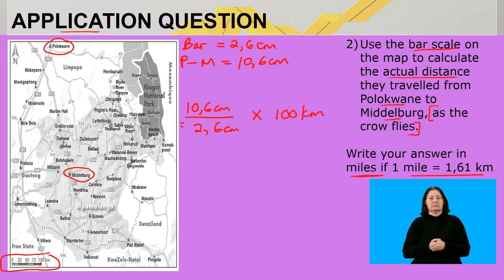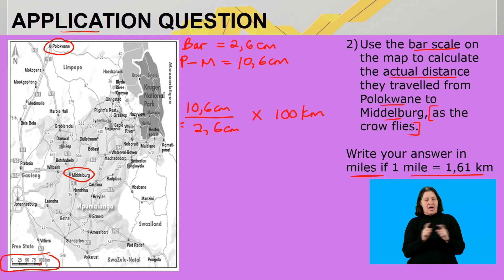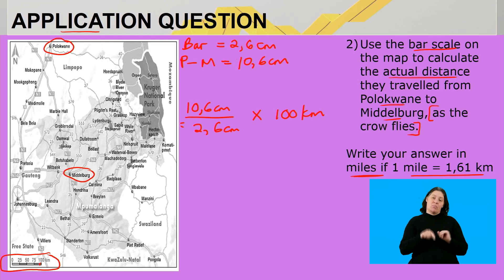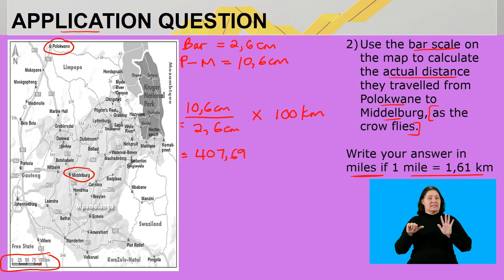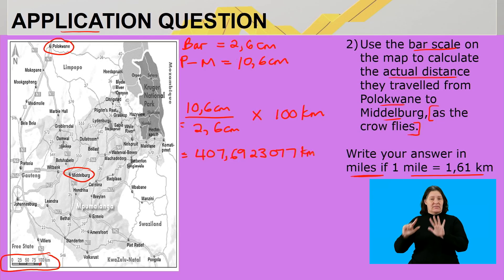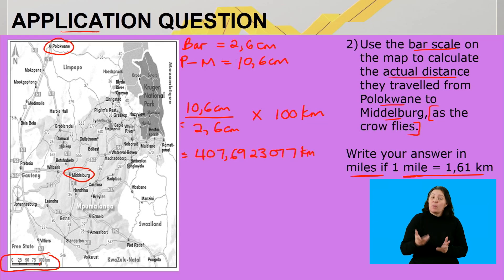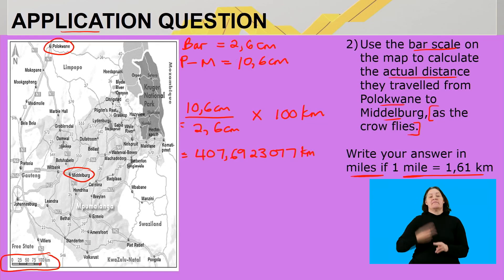The formula is: map distance between the two places divided by the bar length, multiplied by the scale factor. So: 10.6 ÷ 2.6 × 100. That gives us an actual distance of approximately 407.6923077 kilometers. I'm not rounding off yet because the answer must be expressed in miles.